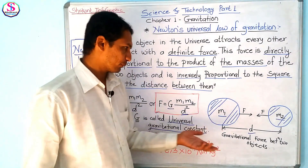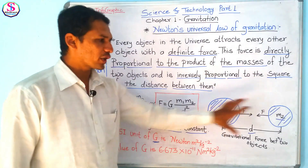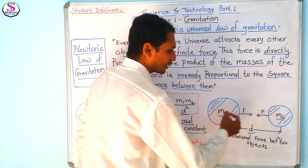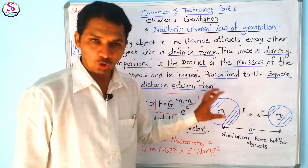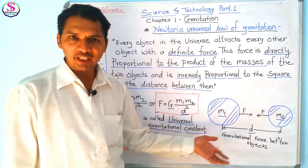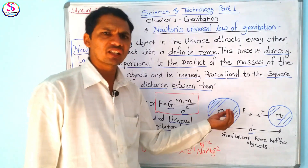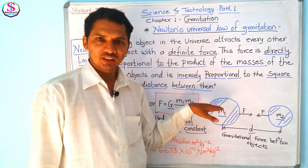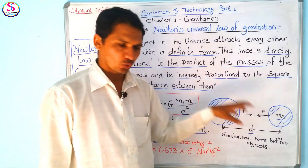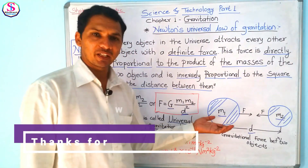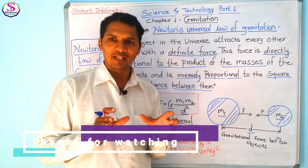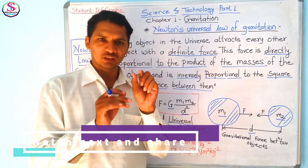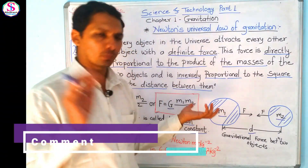One more thing to add: when bodies are spherical in shape, their gravitational force is directed towards the center, joining their centers of mass. If the shape is irregular, the whole mass is considered concentrated at one point — the center of the object. The force acts along the line joining these two centers. We assume that for any irregular body, its entire mass is concentrated at one central point.